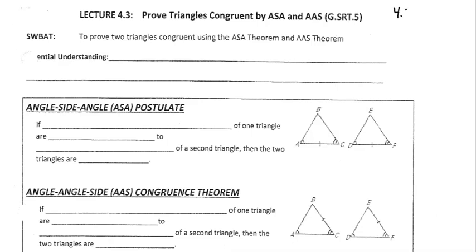4.1 was saying if we wanted to show two triangles were congruent, we had to check all sides, make sure they were all congruent to all the sides on the other triangle, and then check all of the angles. That was six things we had to check. We're more efficient than that — you start looking to see if there's any shortcuts. Maybe we can check only sides or only angles or something like that.